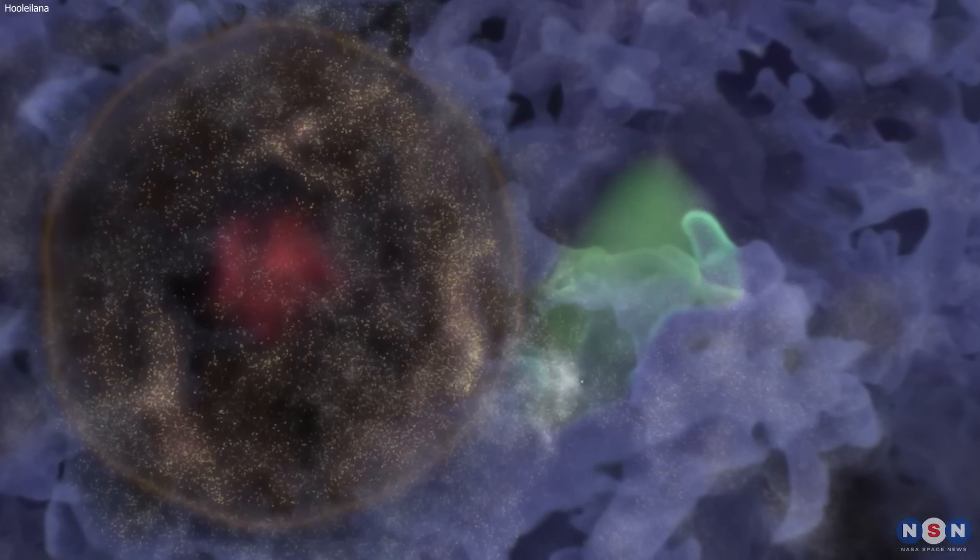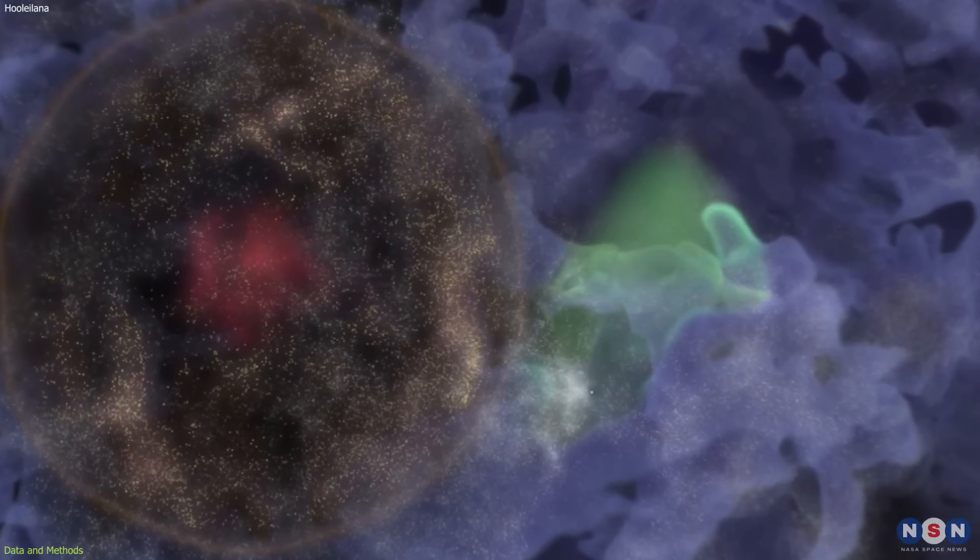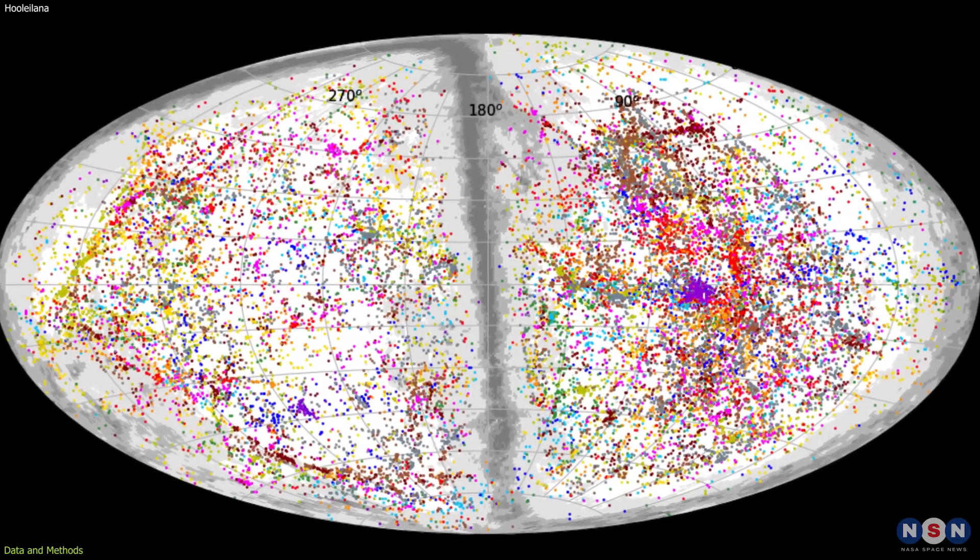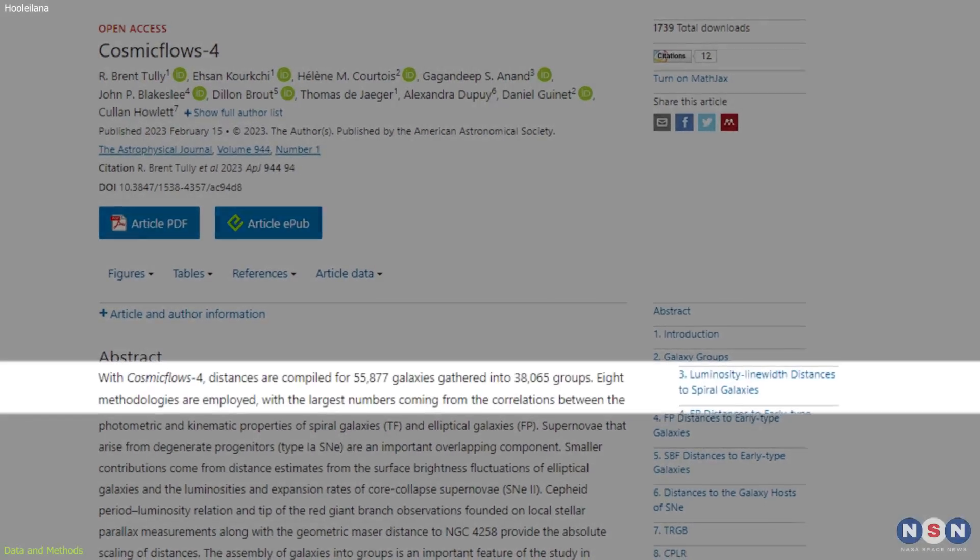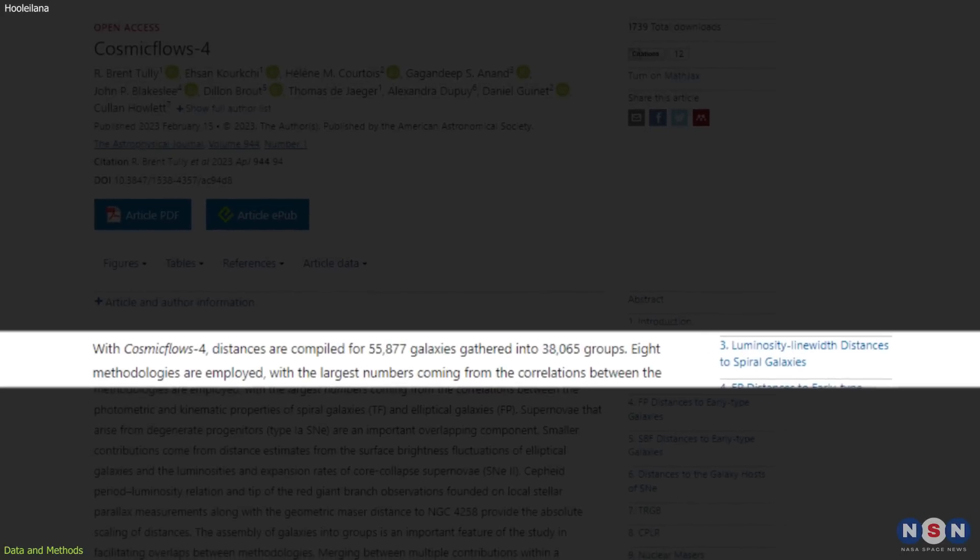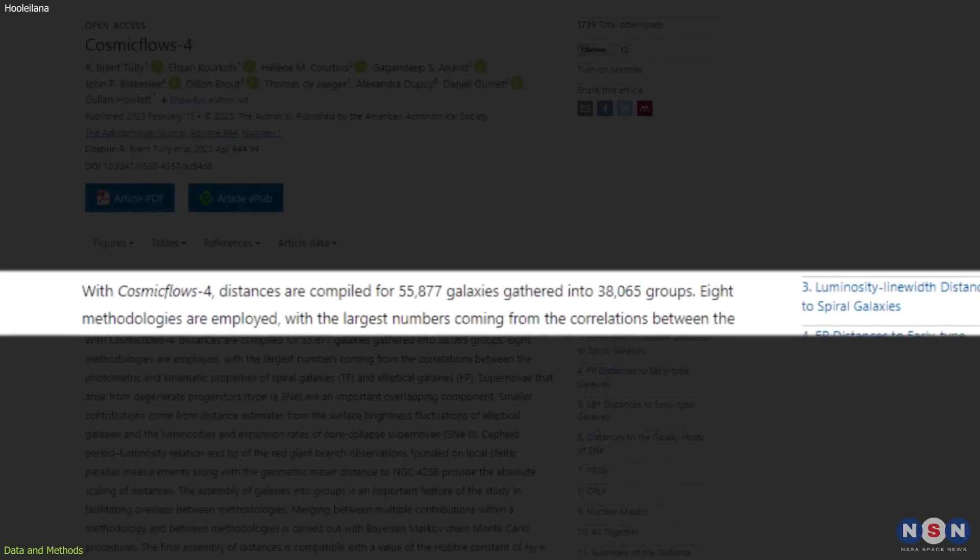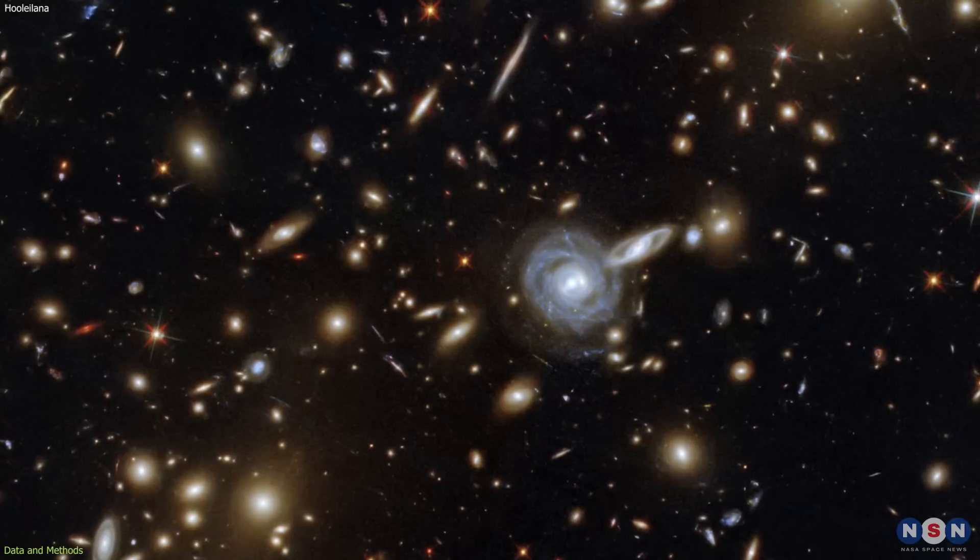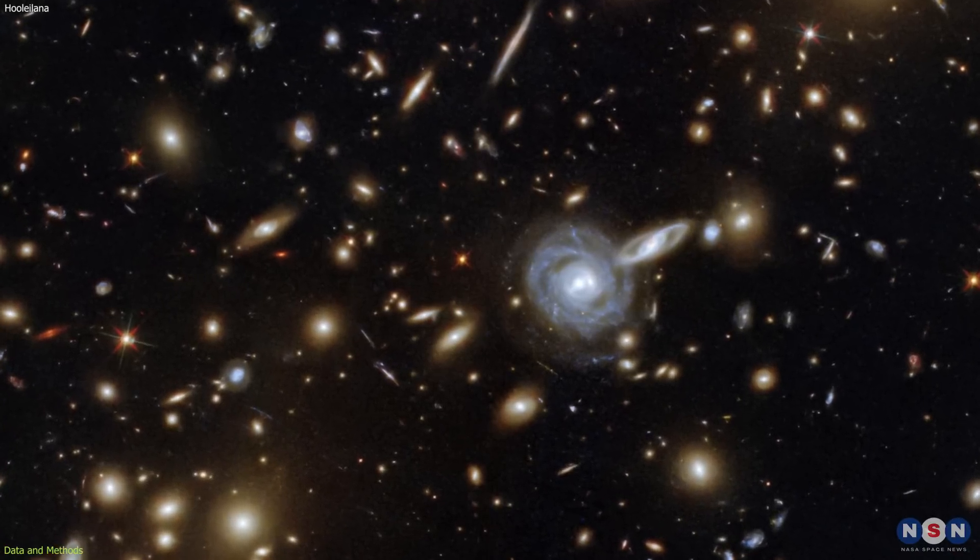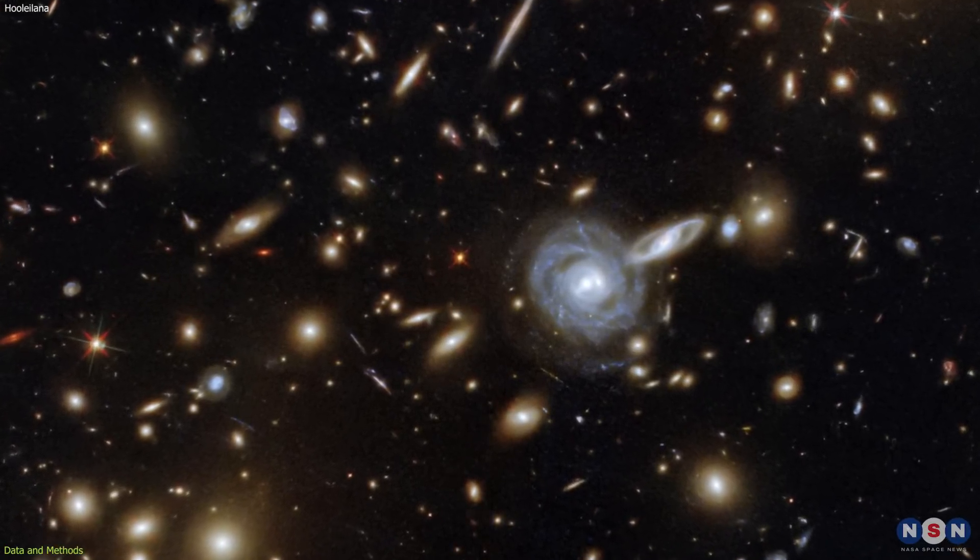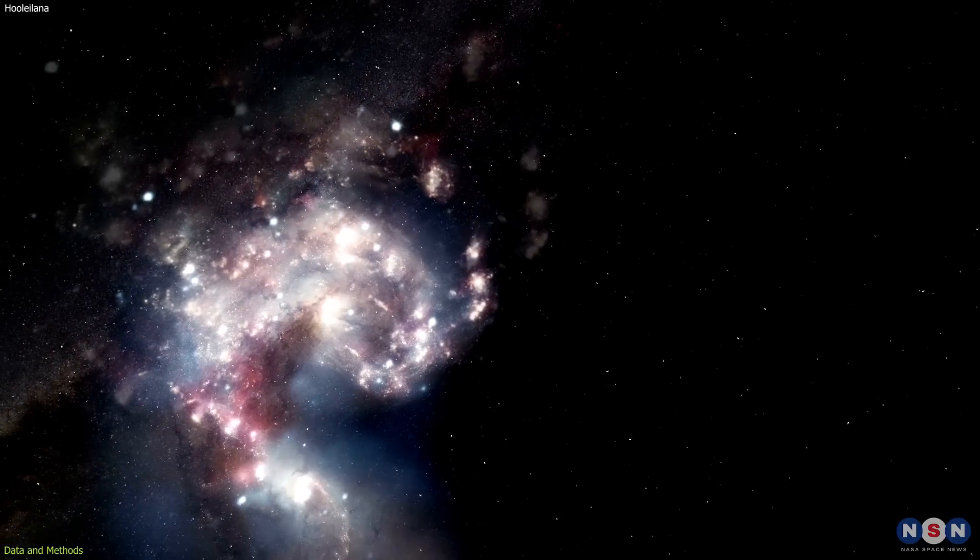Let's start with how the astronomers found this bubble of galaxies. They used data from Cosmic Flows 4, which is a catalog of distances for 55,877 galaxies gathered into 38,065 groups. This catalog is based on various methods of measuring how far away galaxies are from us, such as how bright they appear.